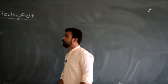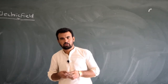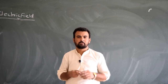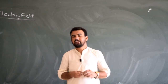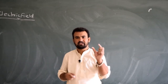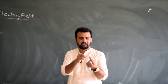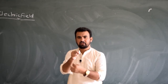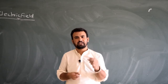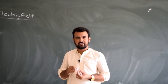Electric field depends upon the charge. The gravitational field depends upon the mass. Suppose this is a charge and this is a mass. The surrounding field is called gravitational field. It means this field is due to the mass.